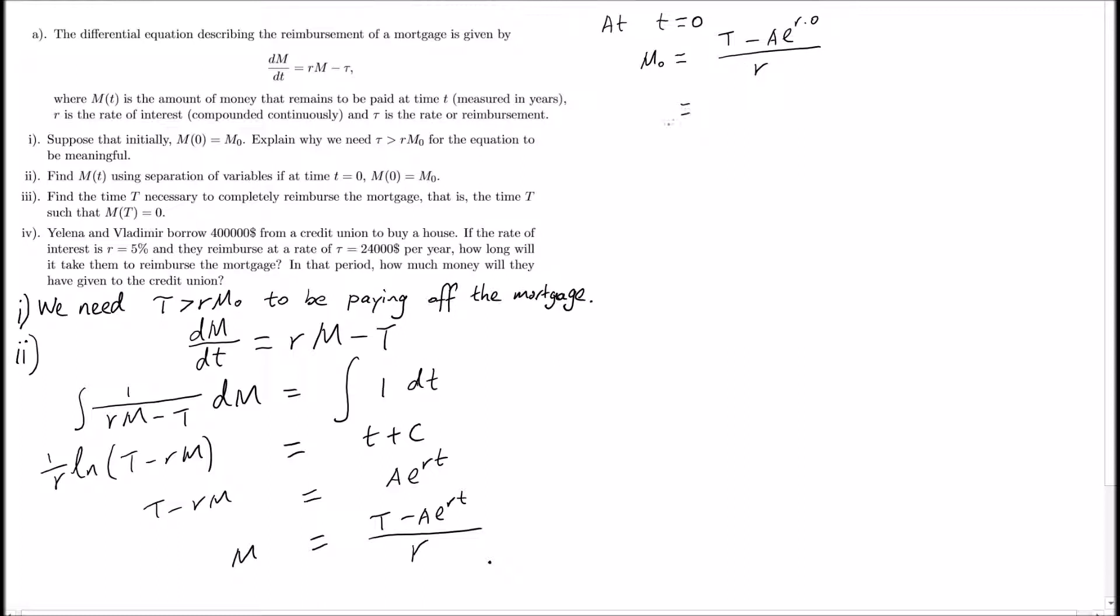We can rearrange this equation to solve for A in terms of M_0. In this case, A equals T minus rM_0. We can put this A into our original equation.